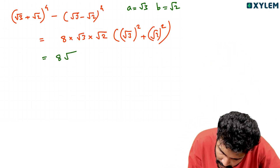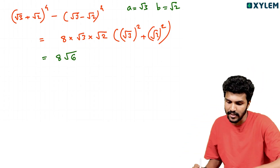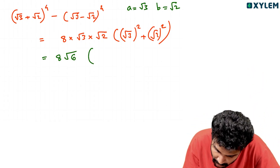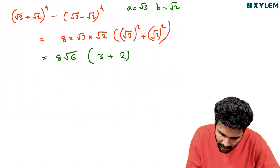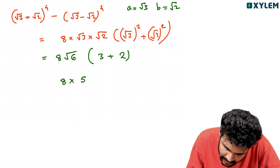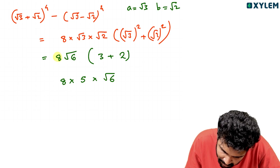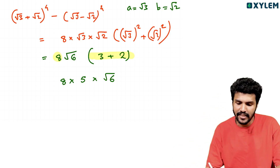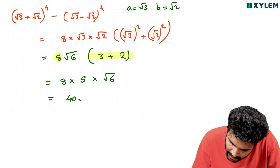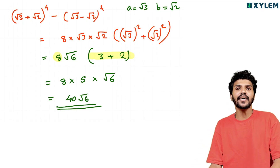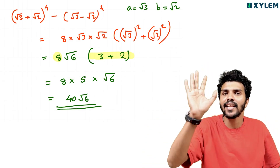The answer is 8 into root 3 into root 2, which is root 6, into (3 plus 2), which is 5. So 8 into root 6 into 5 gives the answer 40 root 6.